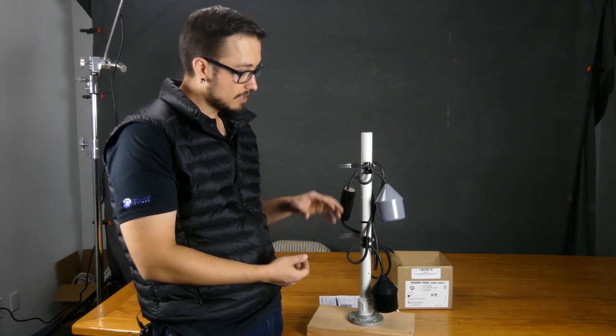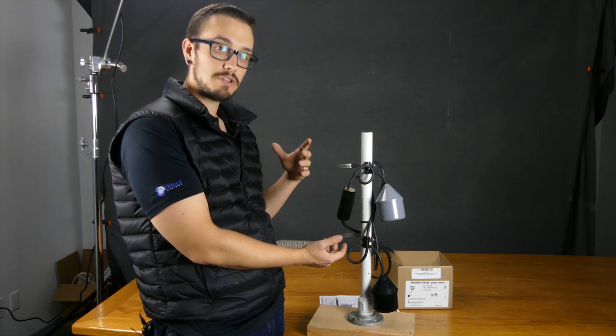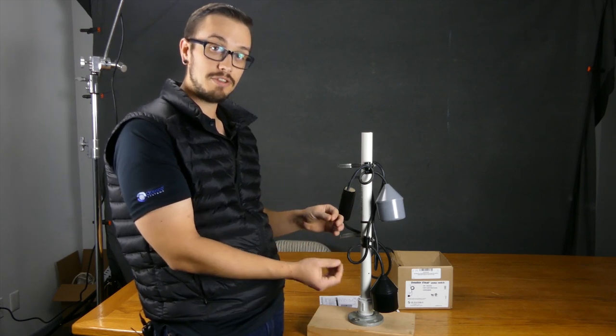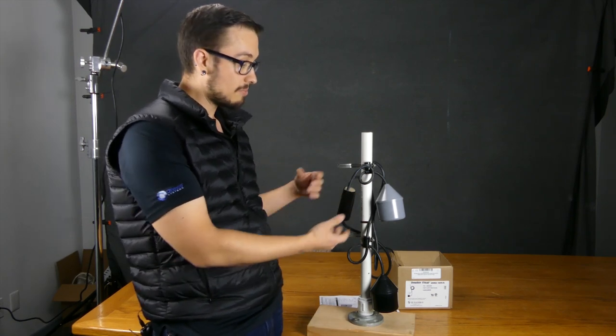The nice thing about these double float switches is you can actually get really tight with a minimum pumping range of 1.75 inches, which seems extreme, but you could stagger them, kind of one over here one over here, and have them really tight and really close.